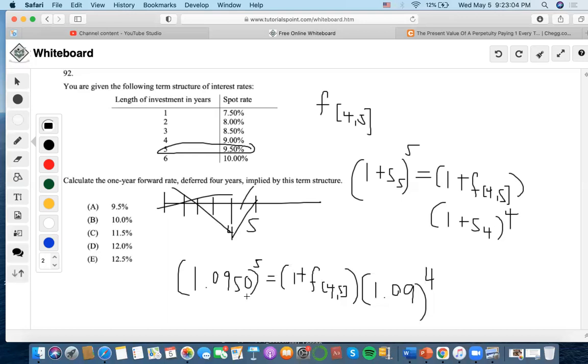So it would be 1.0950 to the fifth, divided by 1.09 to the fourth. It's going to be 1.1152304 and subtract that from one. Then I'll end up getting 11.52 as the answer.